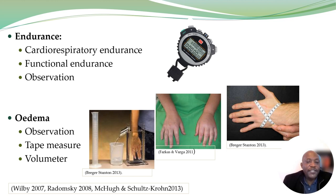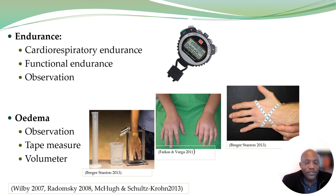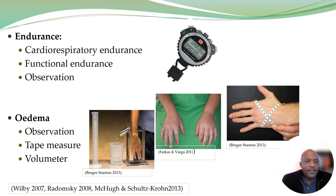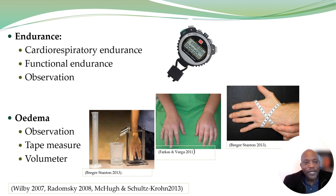For endurance, we can measure cardiorespiratory endurance, and we can also measure functional endurance, which is commonly used in occupational therapy. What we look at there is basically the time the person is able to sustain an activity — for example, if they are to stand, for how long are they able to stand? Or if they're taking a shower, for how long are they able to sustain involvement in that occupation? So functional endurance can be measured based on time and observation.